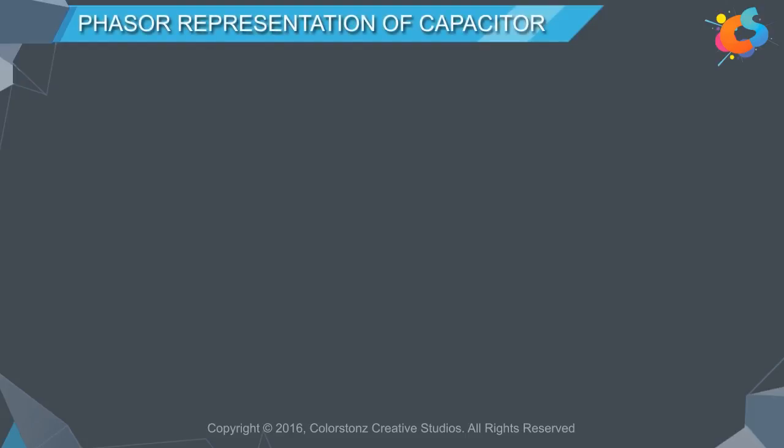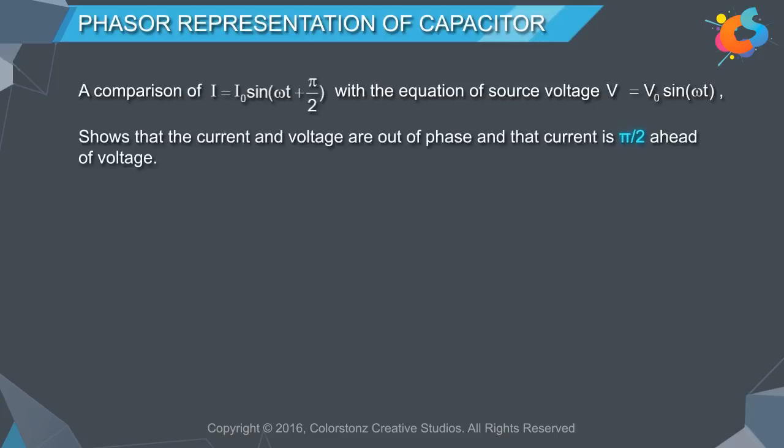Phasor Representation of Capacitor. A comparison of I = I0 sin(ωt + π/2) with the equation of source voltage V = V0 sin(ωt) shows that the current and voltage are out of phase and that current is π/2 ahead of voltage.